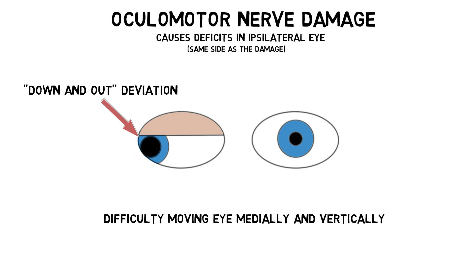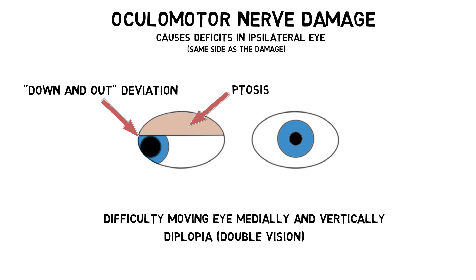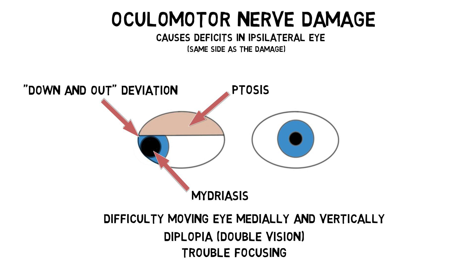Diplopia, or double vision, is common. Ptosis, or drooping of the eyelid, may occur due to paralysis of the levator palpebrae superioris. Because the pupillary constriction muscle is impaired, the pupil on the side of the damage may remain dilated, a condition known as mydriasis, and the patient may have a difficult time focusing the lens for close-up vision due to effects on the ciliary muscle.